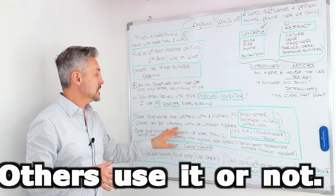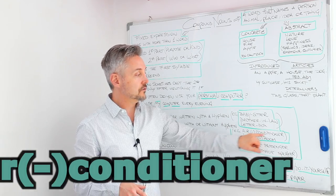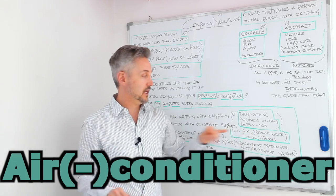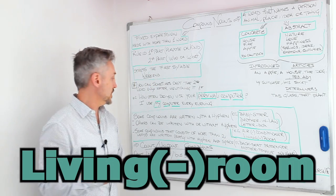Others can be written with or without a hyphen. For example, air conditioner. You can write a hyphen or you can omit it. Living room. Okay? With or without the hyphen.